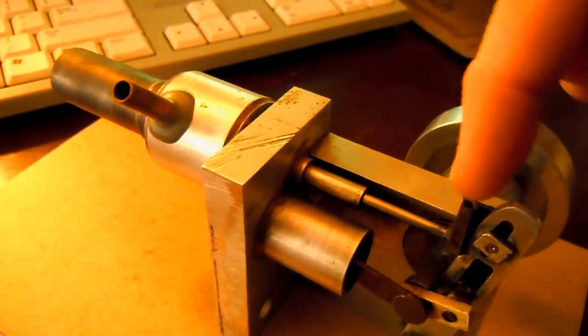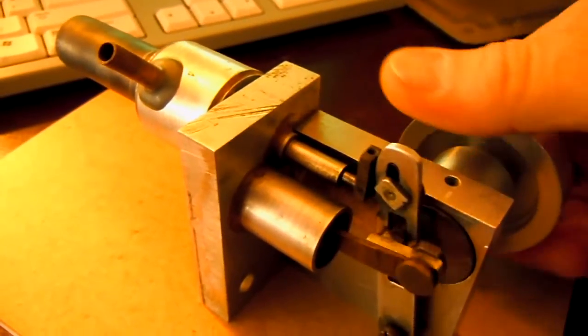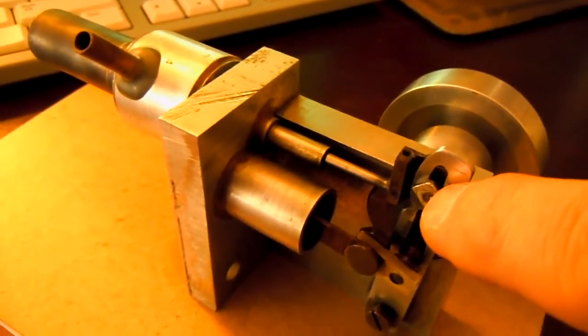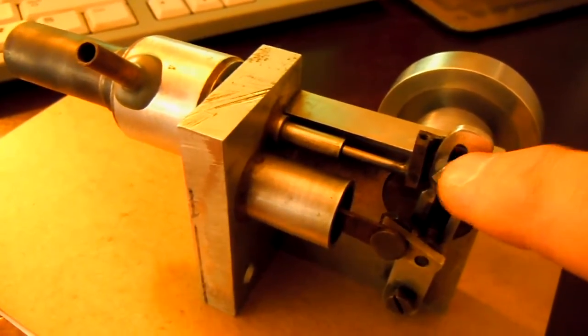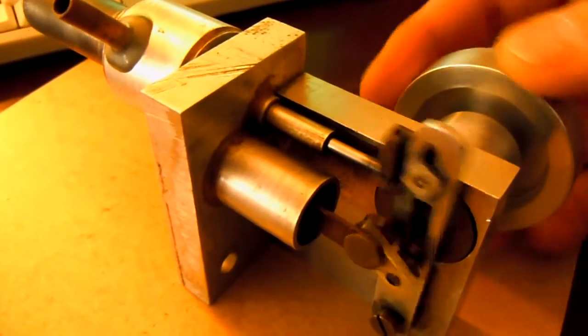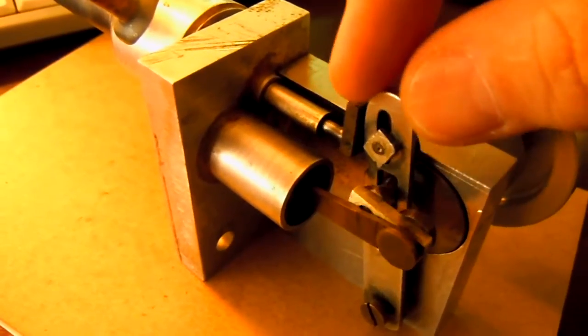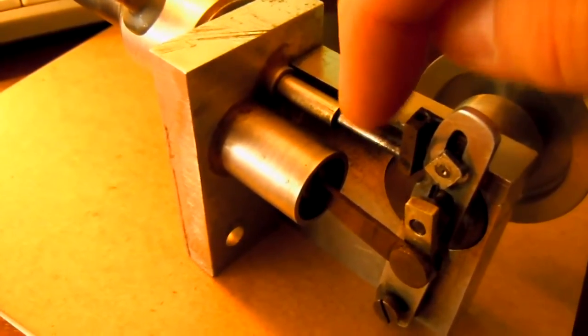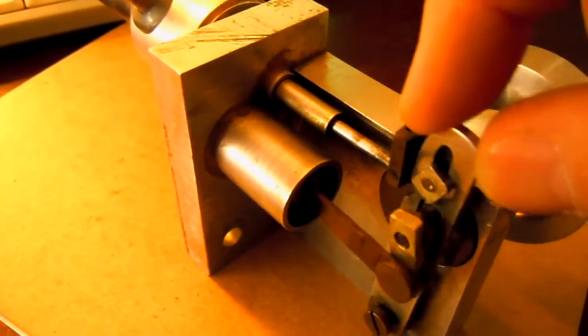And there's a pin behind this rectangular piece here. It rides in this small slot. And without that small slot, and that's the way they had it designed in Popular Science, that oscillating link here would have had to have bent this rod every time the engine went back and forth.